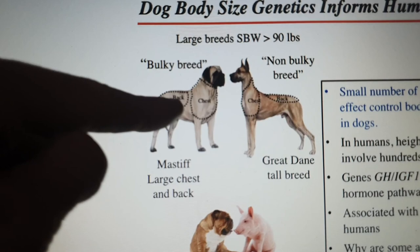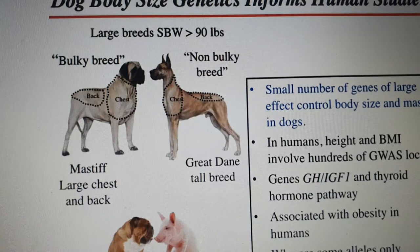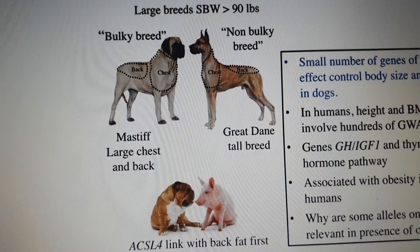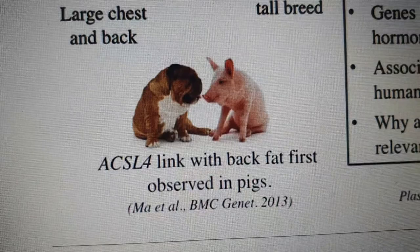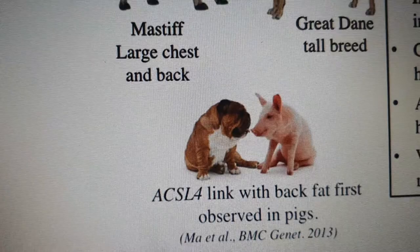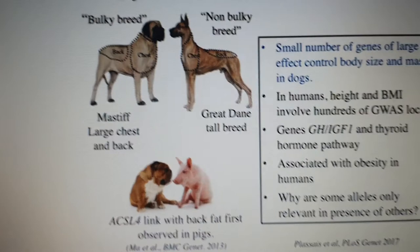This slide is about dog size genetics. A Mastiff shows a big chest circumference and a large fat back, whereas a Great Dane has a quite big chest but not an extremely fat back. The fat-back trait was first observed in pigs — and if you look at current show-type Bulldogs, they closely resemble a pig's morphology. A pig needs to produce bulk meat, which is not a working-dog phenotype.